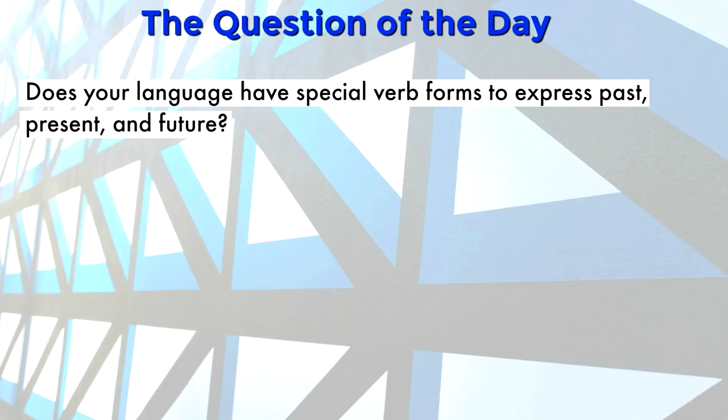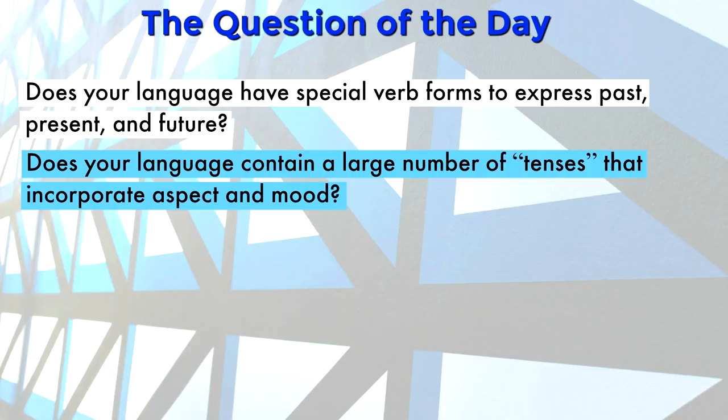The question of the day. Does your language have special verb forms to express past, present, and future? Does your language contain a large number of tenses that incorporate aspect and mood? If you're not quite sure, maybe look it up and find out a little bit about it, and tell us in the comments down below.